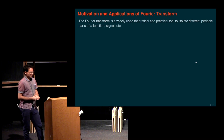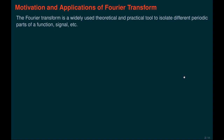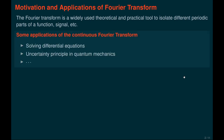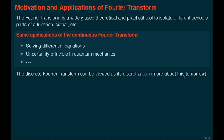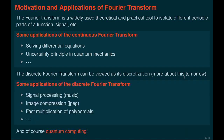The Fourier transform is a widely used theoretical and practical tool. Originally it was developed to isolate different periodic parts of a function, signal, or something similar. It has applications in theory, for example for solving differential equations, and it's related to the uncertainty principle in quantum mechanics between position and momentum. When you discretize it, it's very useful in signal processing, music and sound processing, image processing such as JPEG compression, fast multiplication of polynomials, and of course quantum computing.